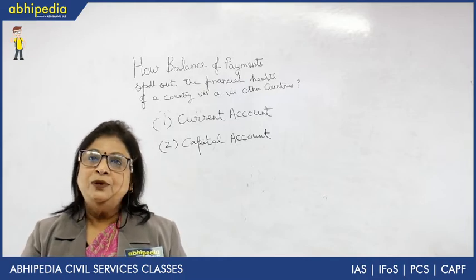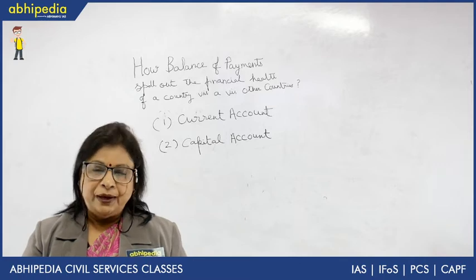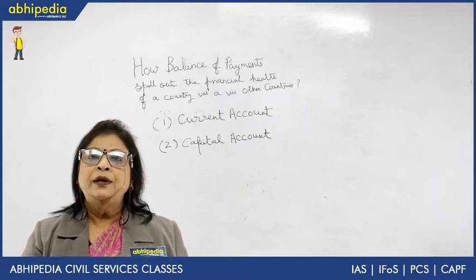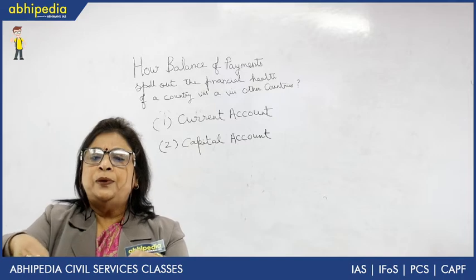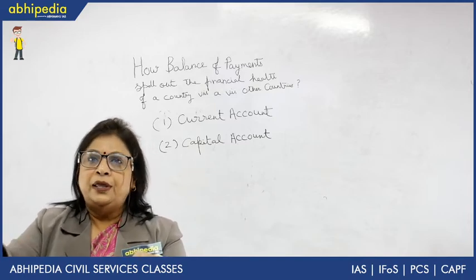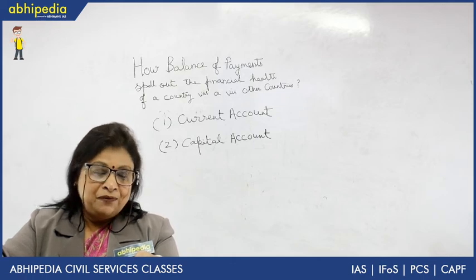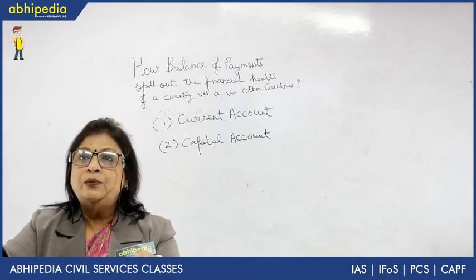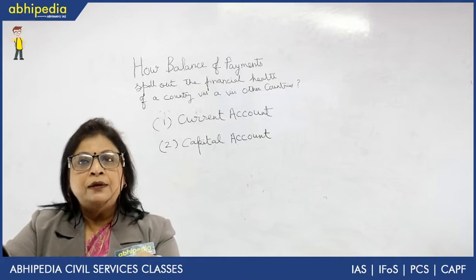Now I move on to types of disequilibrium in balance of payment. First is cyclical disequilibrium — it relates to disequilibrium caused by the operation of the business cycle or trade cycle. Sometimes we have boom, sometimes recession, sometimes depression, and sometimes recovery. If there is disequilibrium owing to these cyclical changes, we call it cyclical disequilibrium.